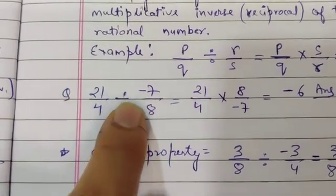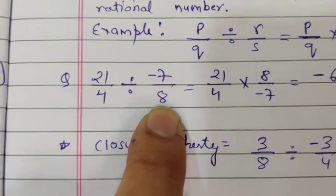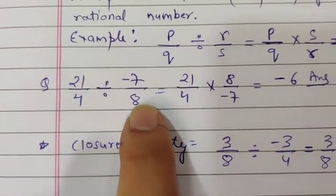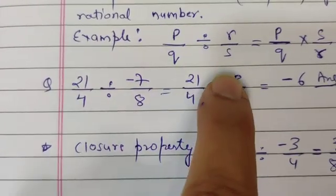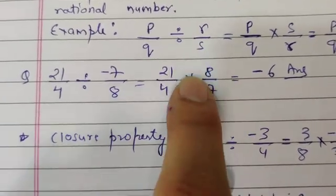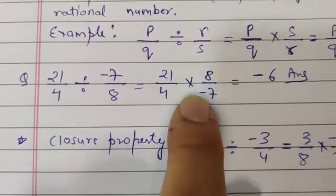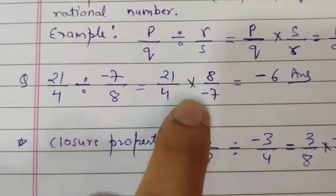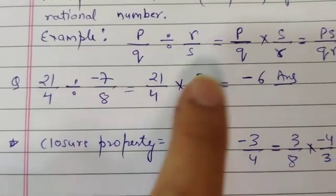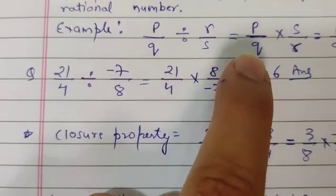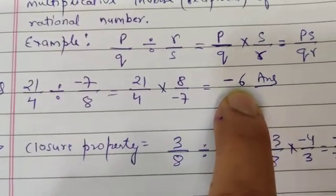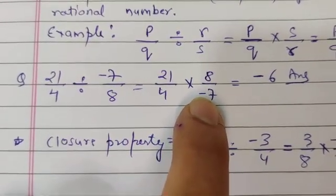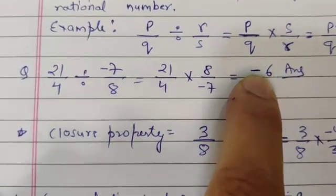21 upon 4 is the dividend, divided by minus 7 upon 8 is the divisor. So यहाँ पर हम sign change कर रहे हैं, divide से multiply करा। Dividend आ गया as it is, but divisor should be reciprocal. So 8 हो जाएगा ऊपर, और 7 हो जाएगा नीचे, with minus sign. Minus sign we can shift here and there. 21 और 7 — we can cancel 21 with 7 by 3, so 3 आ जाएगा ऊपर। और 4 से 8 को cancel करेंगे तो 2 आ जाएगा ऊपर। So 3 multiply by 2 will be 6.